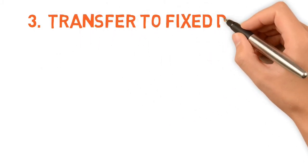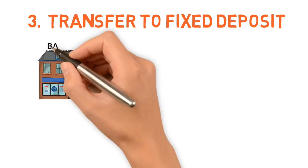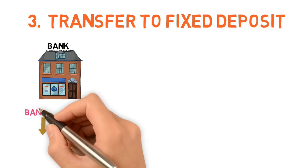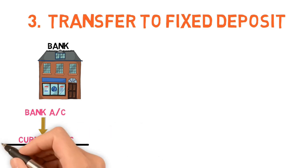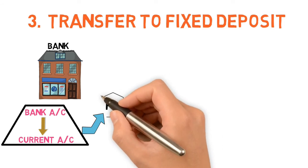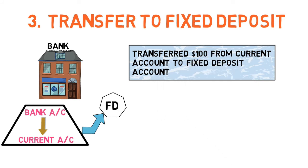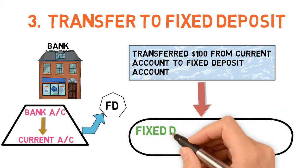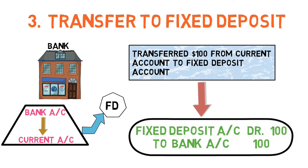Next, we talk about transfer to fixed deposit. When you start a new business, you open an account in the bank — this is called the current account, and 'current account' and 'bank account' refer to the same thing. For example: transferred 100 from current account to fixed deposit account. The journal entry is: Fixed Deposit Account debit 100, to Bank Account 100 — because money is going out of the bank account.